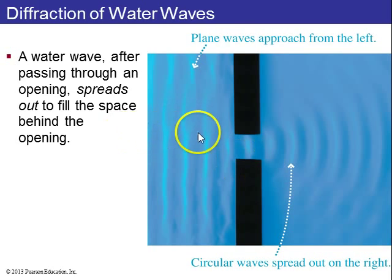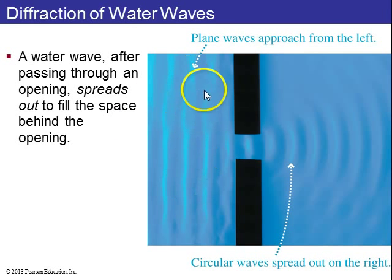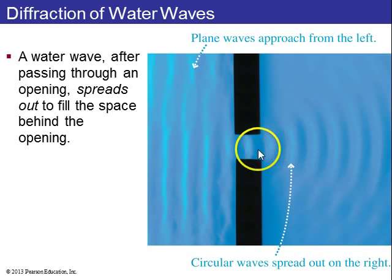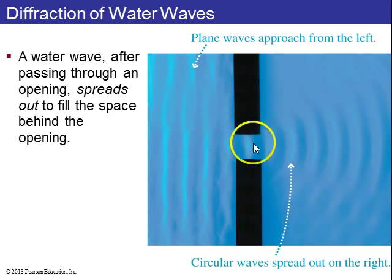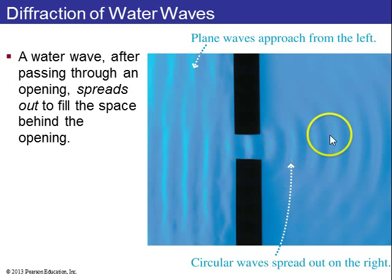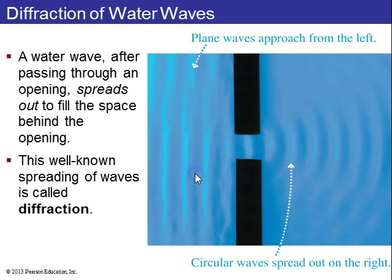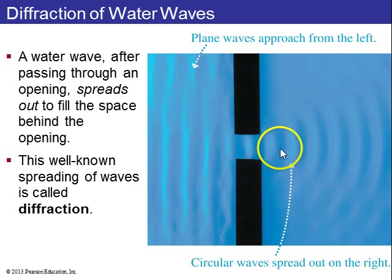They start off as sort of linear lines, or plane waves, before they go through the opening. When they go through a narrow opening where the width of the opening is about the same as the wavelength, or less than the wavelength, then they come out spherical on the other side. This is called diffraction — it's a well-known wave effect.